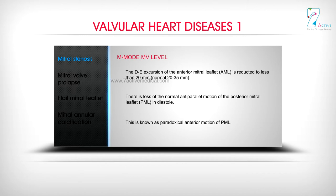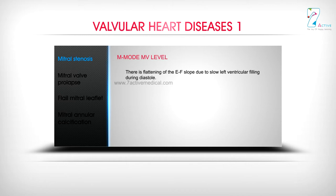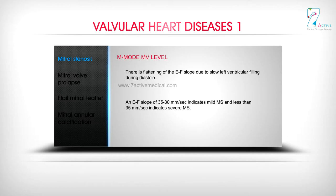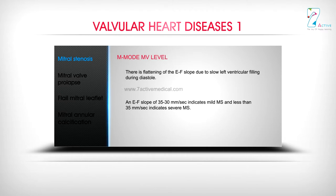This is known as paradoxical anterior motion of the PML. There is flattening of the EF slope due to slow left ventricular filling during diastole. An EF slope of 35–50 mm per second indicates mild MS, and less than 35 mm per second indicates severe MS.